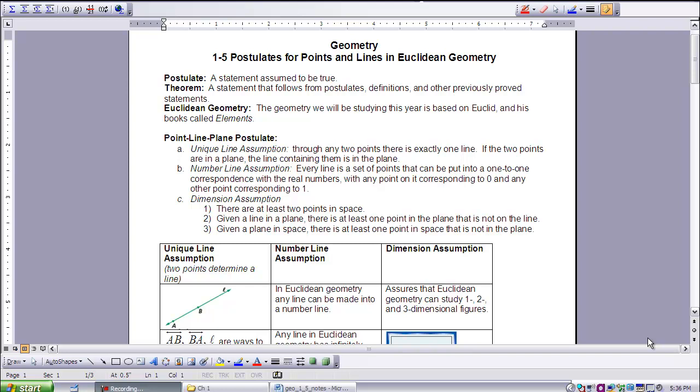We start off with some undefined terms: point, line, and plane. Using those three undefined terms, we're going to start with our first assumption, or our first postulate. Things that we assume to be true, so that we have the first pieces of our rule book, so to speak.